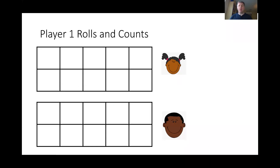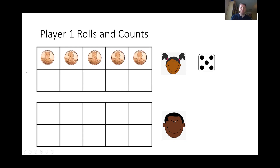This is how you play. Let's pretend we have two players, a girl and a boy. The first player is going to roll the dice — roll it and drop it. And she rolled a five. So she counted five pennies onto her 10 frame. Now the object of this game is to make 10, and you have to make 10 exactly. You can't go over 10, you can't go under 10. Has to be 10 exactly. So did she win? She did not win. She has to keep playing.